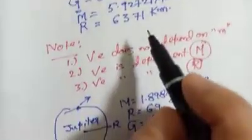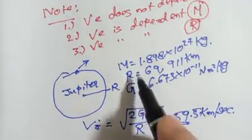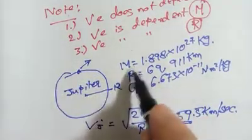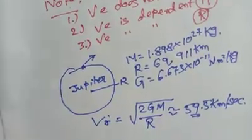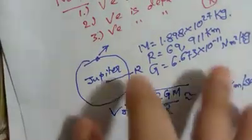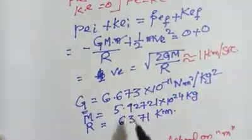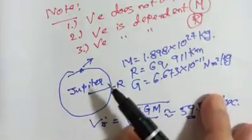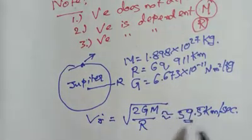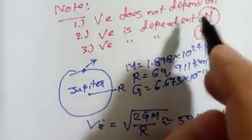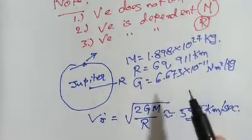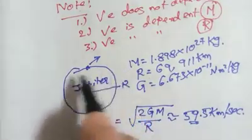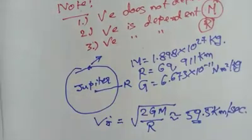You can see that escape velocity doesn't depend upon the mass of the object M. What it depends on is the radius of the planet and the mass of the planet. If we know M, G, and R for any other planet, we can easily calculate its escape velocity. If you're curious about how to calculate the mass of a planet, you can watch my next video. Thank you very much for watching.